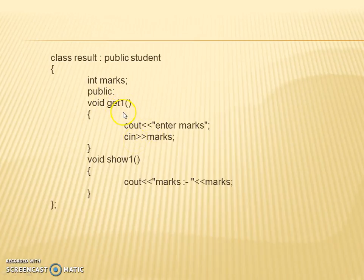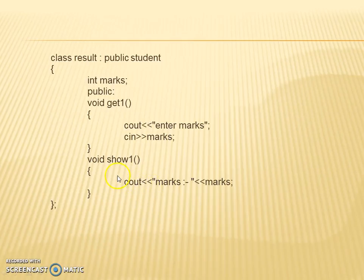In void show one, we use cout to display the marks that were entered by the user. So show one is the method used for displaying the marks.